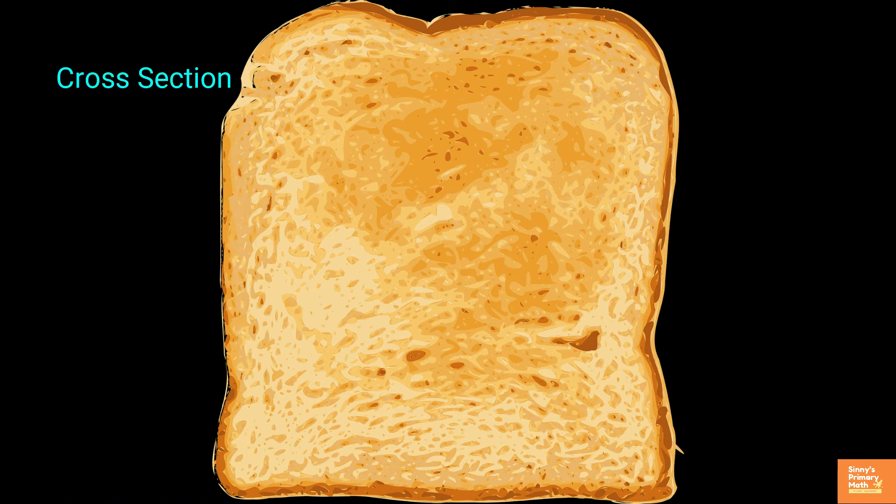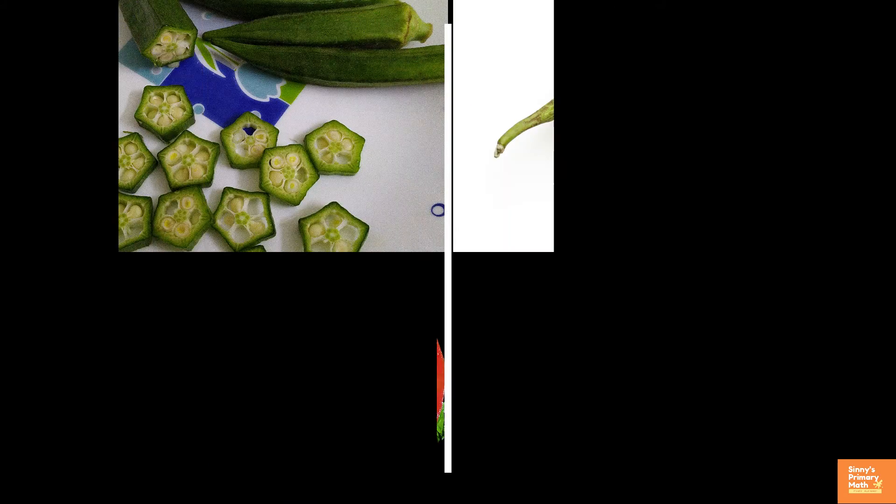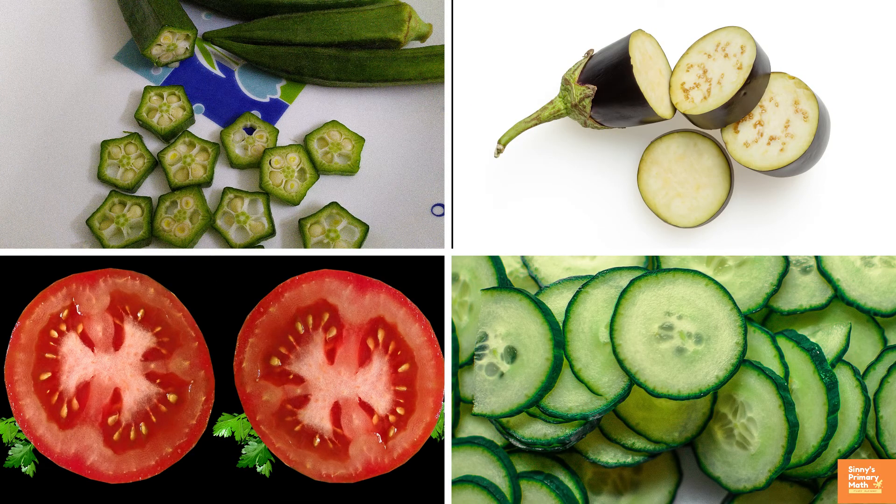In this case, the cross section is nearly a square. If your cut is not vertical, you may get a different cross section. Look at the cross sections of some vegetables.